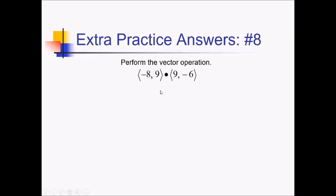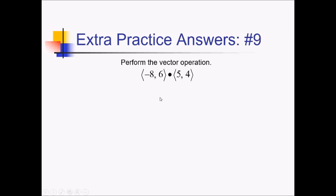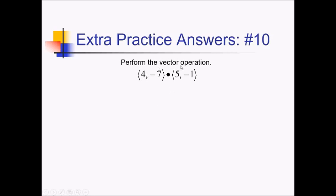In this problem we're finding the dot product of two vectors — we multiply the x's and y's separately and then add those products together. So we've got negative 8 times 9 plus 9 times negative 6, which is negative 72 plus negative 54, giving a grand total of negative 126. For the next dot product: negative 8 times 5 plus 6 times 4 is negative 40 plus 24, which comes out to negative 16. And for the last one: 4 times 5 plus negative 7 times negative 1 is 20 plus 7, which comes out to 27.